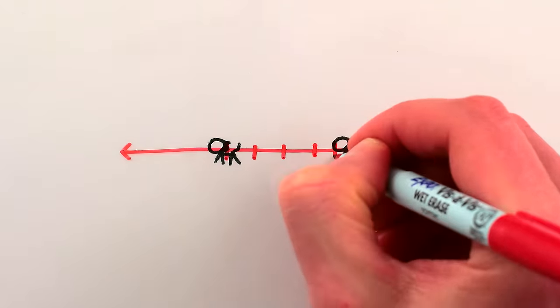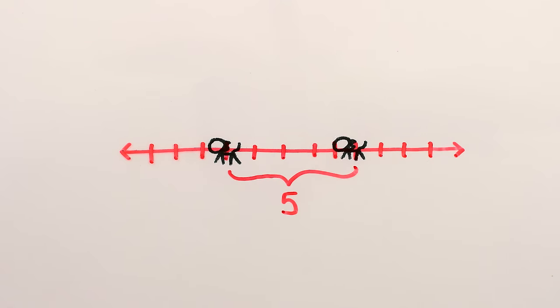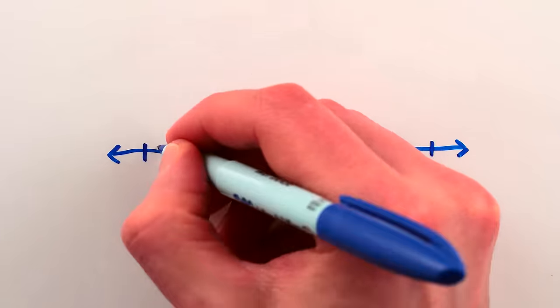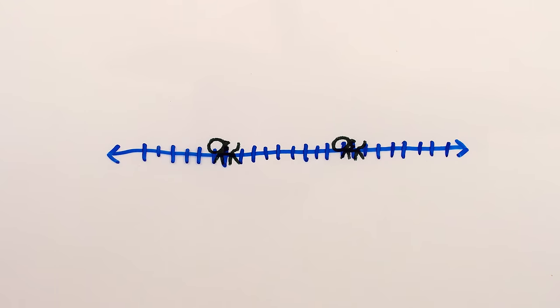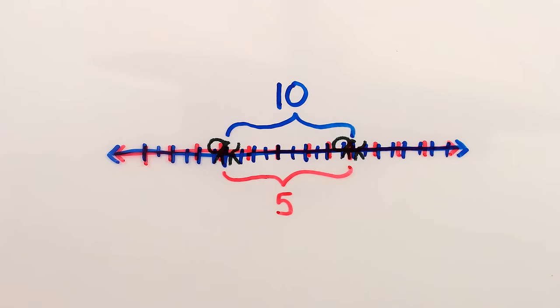However, the distance between two points does change if we're allowed to change the spacing of the tick marks. If when we change our axes we also double the tick marks, then the distance between the cats becomes 10, not 5. Turns out distance, measured in numbers, is not so universal.